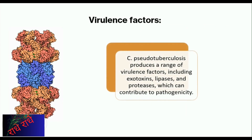Corynebacterium pseudotuberculosis produces a range of virulence factors, such as exotoxins secreted into the environment, lipases, and proteases, giving it pathogenic potential. By being able to produce such toxins, it can colonize and cause disease.